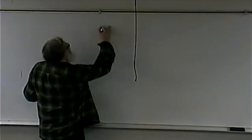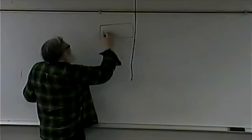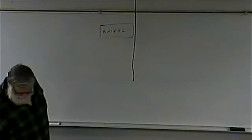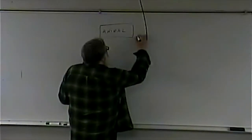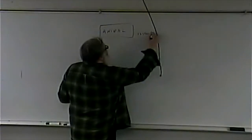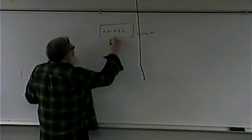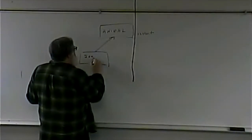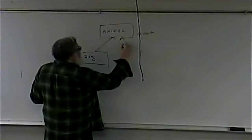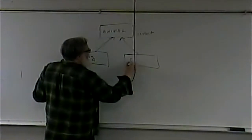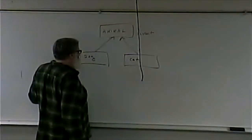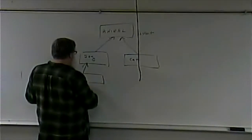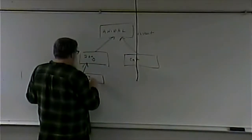Here's our inheritance scheme. At the top we have Animal — this is an abstract class. Inheriting from Animal we have Dog and Cat. We then inherit from Dog a class called ServiceDog.